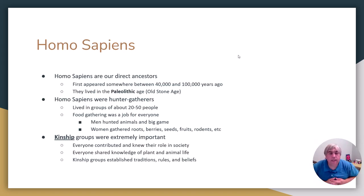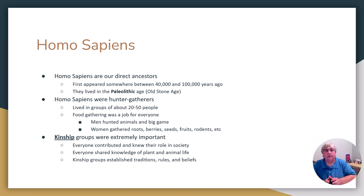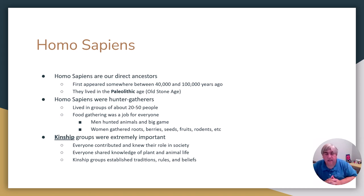Homo sapiens are our direct ancestors. In fact, today we as modern-day humans are known as Homo sapiens sapiens. These early Homo sapiens appeared about a hundred thousand years ago and lived up till about 40,000 years ago. The period in which Homo sapiens lived is known as the Paleolithic era — make sure you know that, it will be on the midterm. Paleo means old, lithic means stone. If you've ever heard of the paleo diet, that's just the old diet. So the Paleolithic is the old stone age.